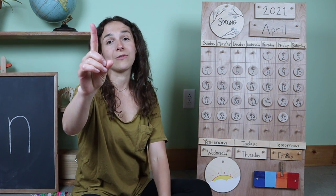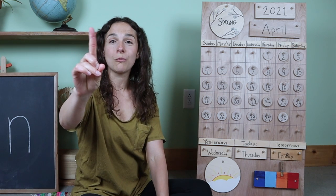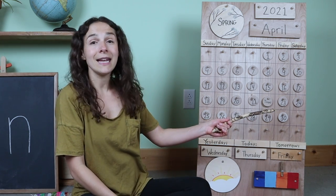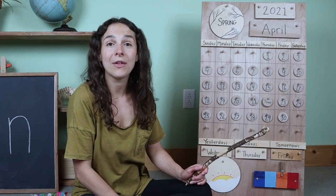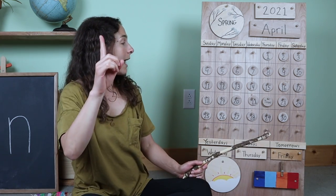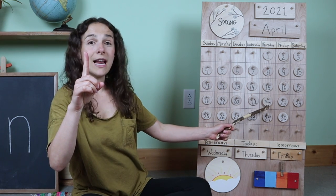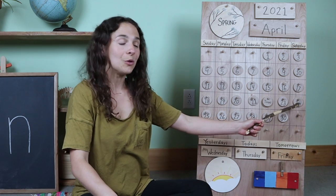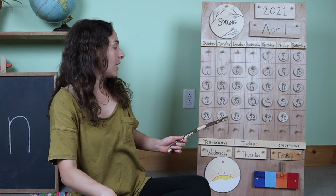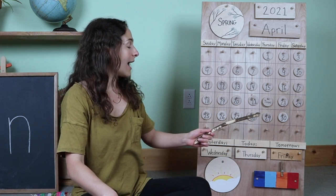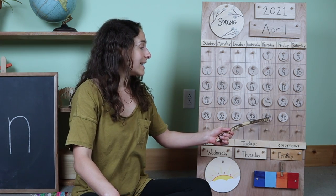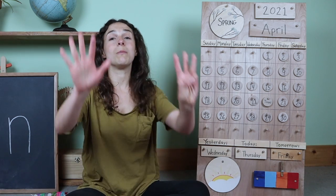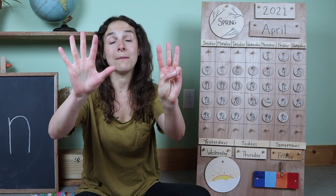Let's get our counting fingers ready and give them a little stretch to warm them up. Let's count the remaining days that we have in the month of April. I'm going to have my counting finger and after today we are going to count: one, two, three, four, five, six, seven, eight. After today there will be eight days left in the month of April.